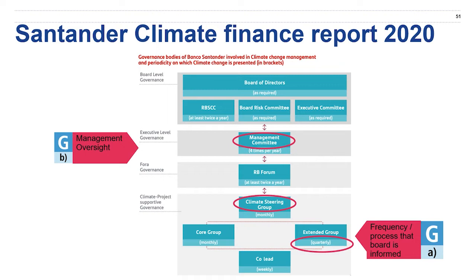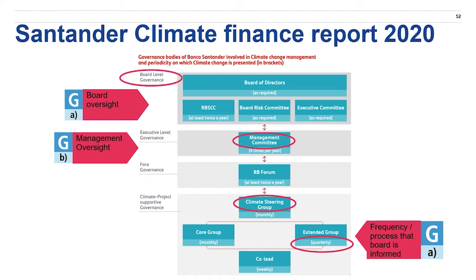Another best practice is that they also provide information on the board oversight. At the board level, they give you information on who is responsible and through what committees they're responsible for evaluating climate-related risks and opportunities. I'm sure you all found a few more than that, but just to give you a pointer on some best practice there.